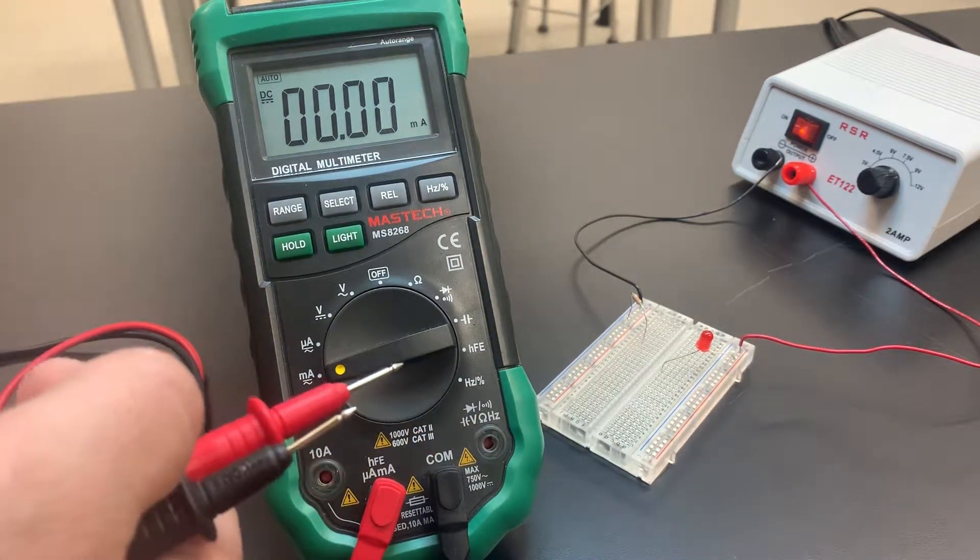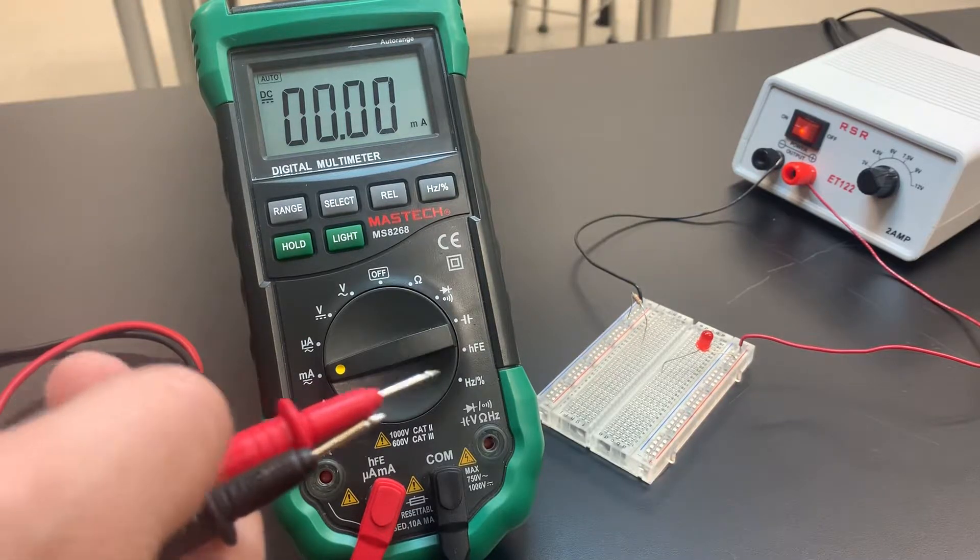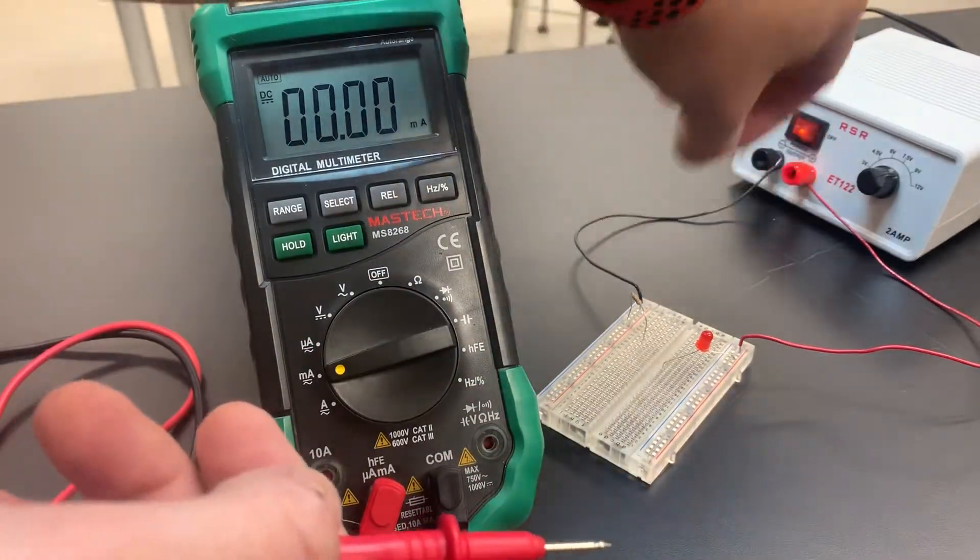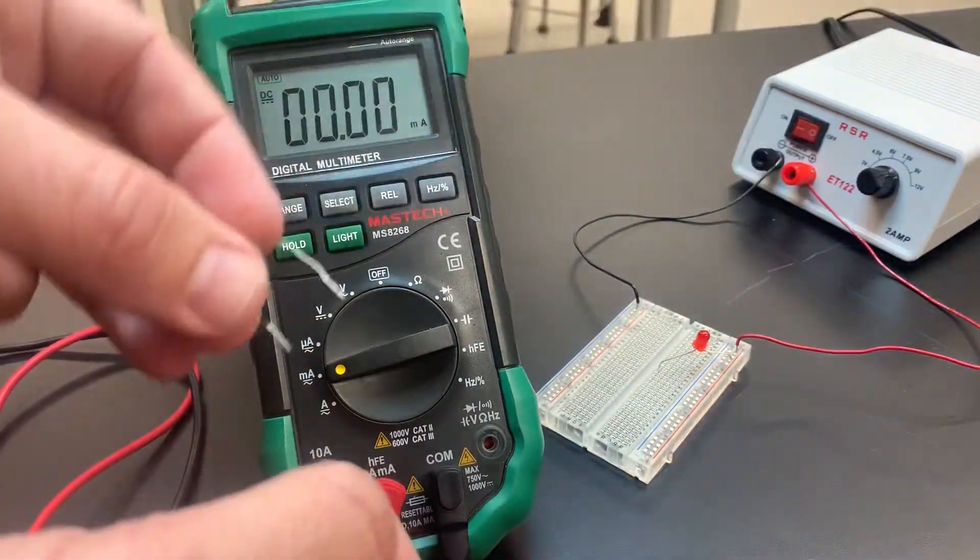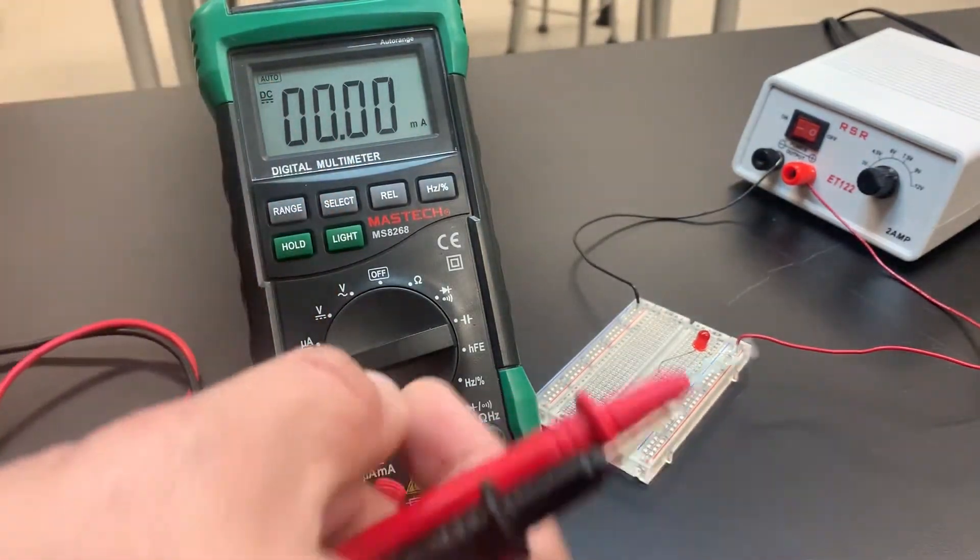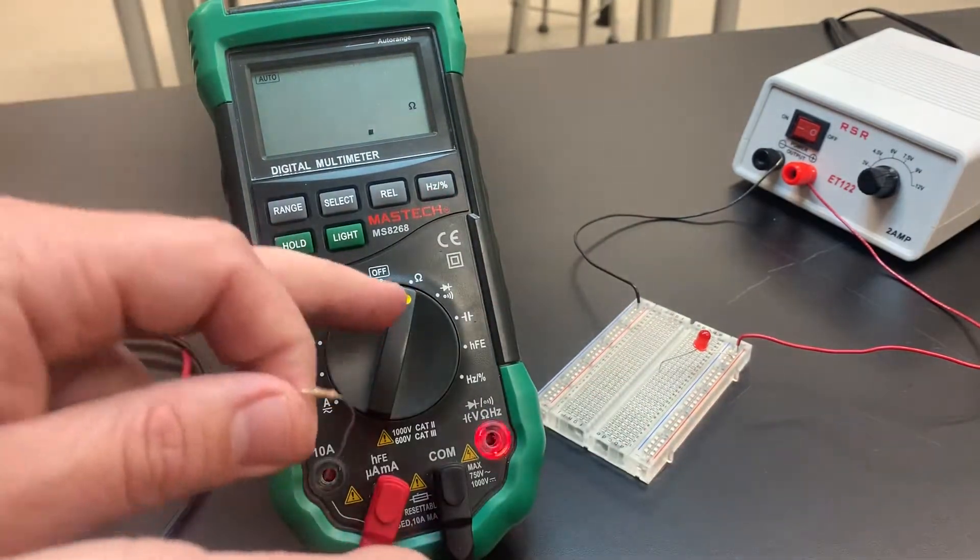the best way to do it is completely remove the resistor. So I'm going to turn it off. I'm going to completely remove my resistor here and I'm going to go to the resistance, which is in ohms.